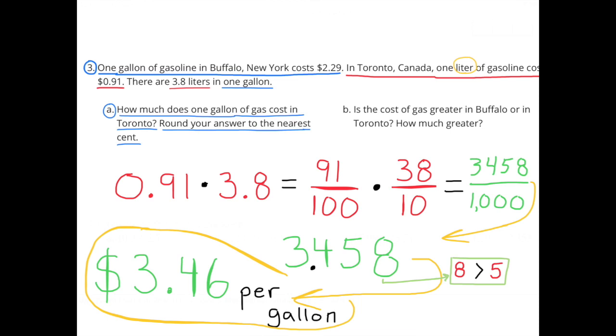Number 3: 1 gallon of gasoline in Buffalo, New York costs $2.29. In Toronto, Canada, 1 liter of gasoline costs 91 cents. There are 3 and 8 tenths liters in 1 gallon. Part a: How much does 1 gallon of gas cost in Toronto? Round your answer to the nearest cent. 91 cents times 3 and 8 tenths is the same thing as 91 hundredths times 38 tenths, which equals 3 and 458 thousandths. Since the 8 in the thousandths place is greater than 5, we can round 45 cents up to 46 cents. So 1 gallon of gas in Toronto costs $3.46 per gallon.